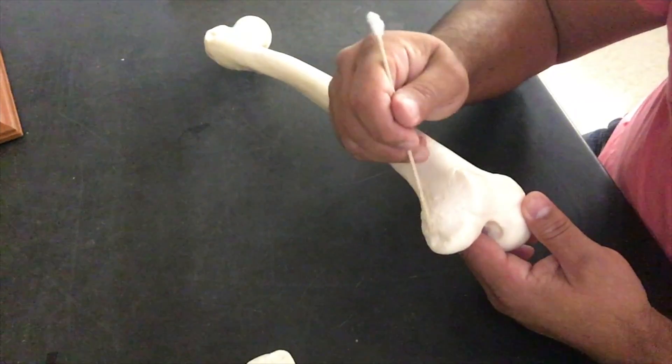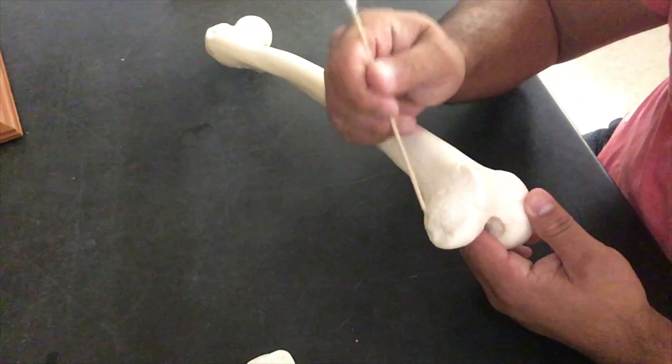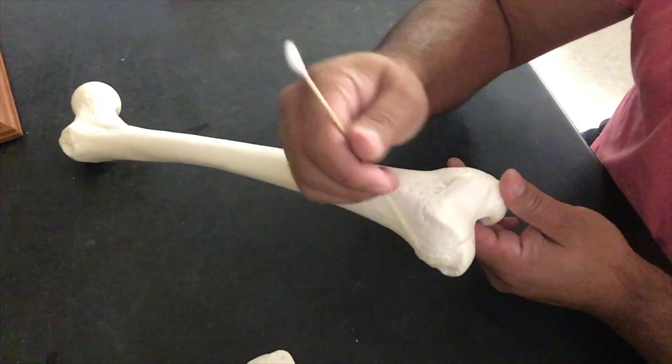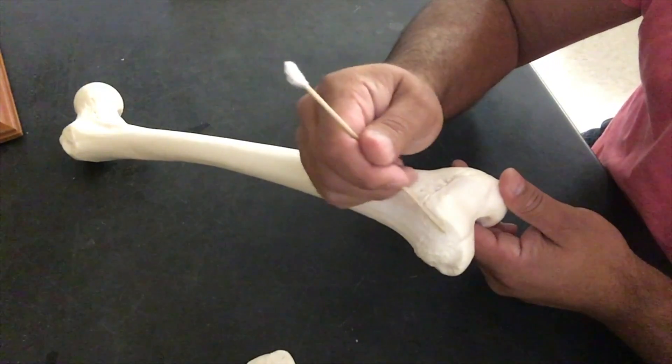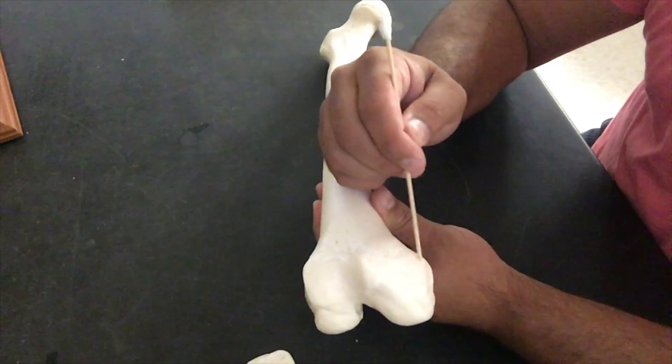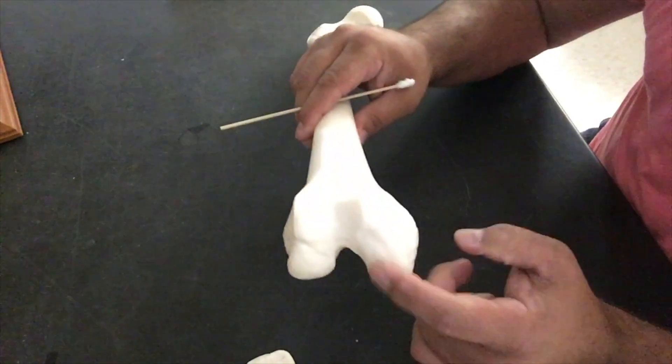Now, we have another bump or process on top of the condyle. So if we think of our word for on top of, it is epi, so this will be our epicondyle. We have one there, and we're going to have one on the uppermost aspect of this condyle.